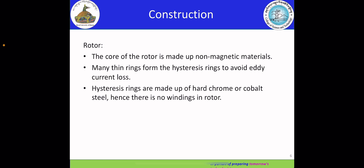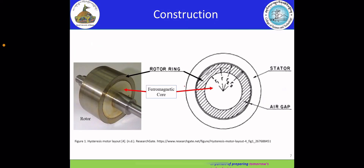Secondly, the rotor. The core of the rotor is made up of non-magnetic material. Many thin rings form the hysteresis ring to avoid eddy current loss. Hysteresis rings are made up of hard chrome or cobalt steel. Hence, there is no winding in the rotor. This diagram shows the construction of the hysteresis motor, illustrating the ferromagnetic core, rotor rings, stator, and air gap.